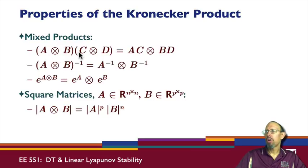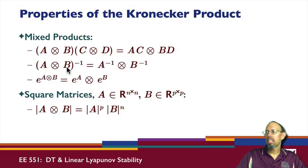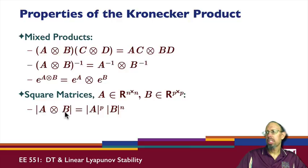We can also have mixed products: if I have (A⊗B) multiplied in the standard form by (C⊗D), I can write it as the Kronecker product AC⊗BD. The inverse of (A⊗B) can be written as (A⁻¹⊗B⁻¹). The matrix exponential satisfies e^(A⊗B) = e^A ⊗ e^B. And for square matrices, where A is n×n and B is p×p, the determinant of (A⊗B) equals det(A)^p times det(B)^n.